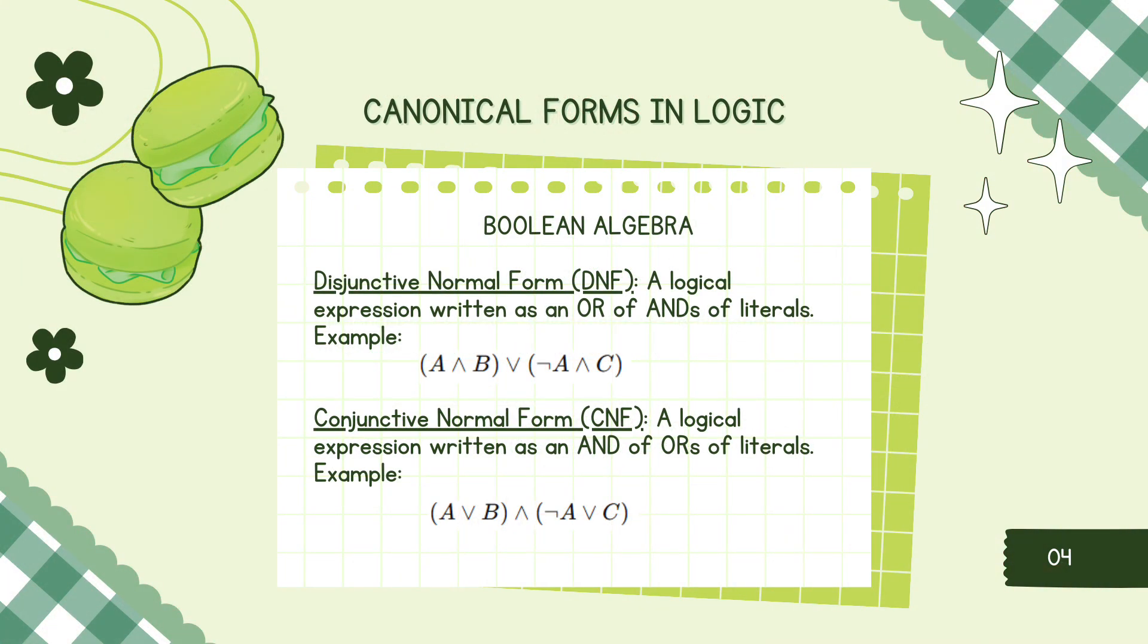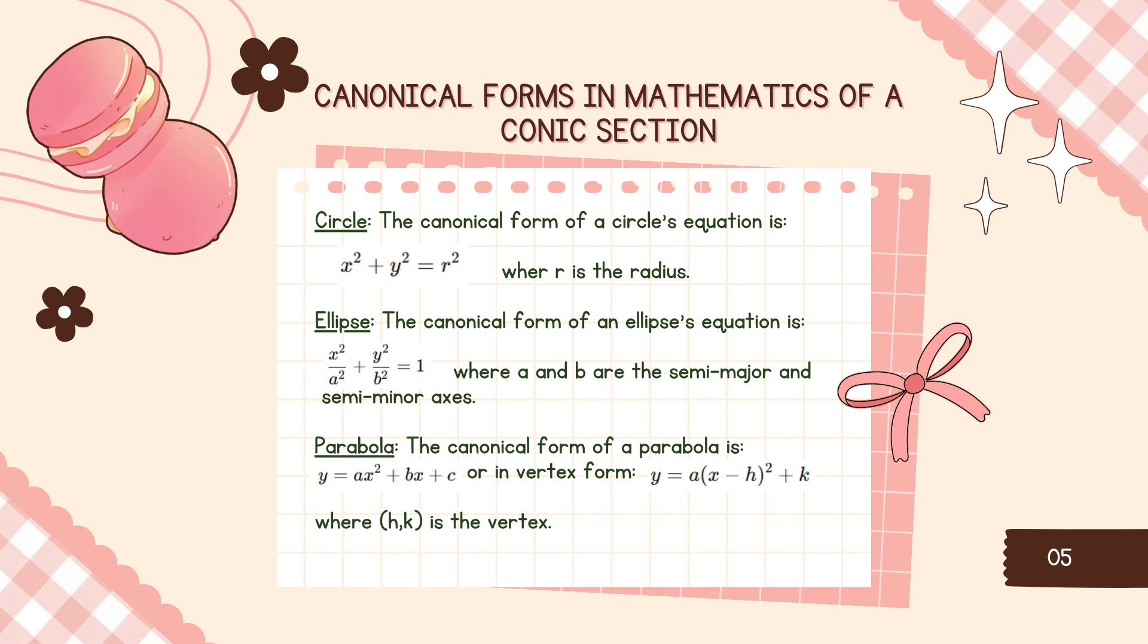Next canonical form is canonical forms in logic. For example, Boolean algebra. Disjunctive normal form or DNF is a logical expression written as an OR of ANDs of literals. For example, quantity of A and B, or quantity of negation of A and C. This expression is in disjunctive normal form. Conjunctive normal form or CNF is a logical expression written as an AND of ORs of literals. For example, quantity of A or B, and quantity of negation of A or C. This expression is in conjunctive normal form. These are the standardized expressions for logical formulas.